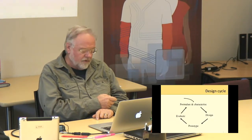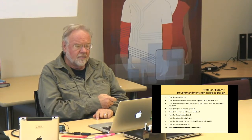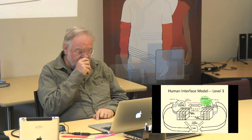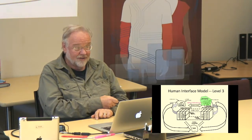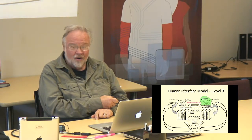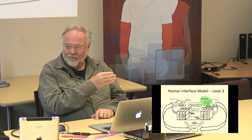We talked about the systems engineering design cycle that you generally go through when designing interfaces. We looked at the commandments and this idea of using a persona to represent the user, because it's very difficult to make everybody happy — so you concentrate on one person. The story about the Porsche: the designer said, 'I designed that car for myself. I just wanted something that I would like.' And generally when you do that, you find that other people will like it as well.